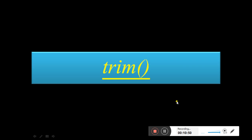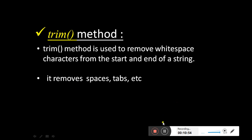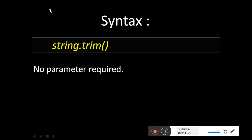Now see the next method: trim. The trim method is used to remove the white space characters from the start and the end of the string. It also removes extra spaces between characters — if there are extra spaces given, it removes those as well. It removes spaces, tabs, etc. The syntax is simply: string.trim(). There is no parameter required — you just write the variable name where your string is stored followed by dot trim, all in small letters.